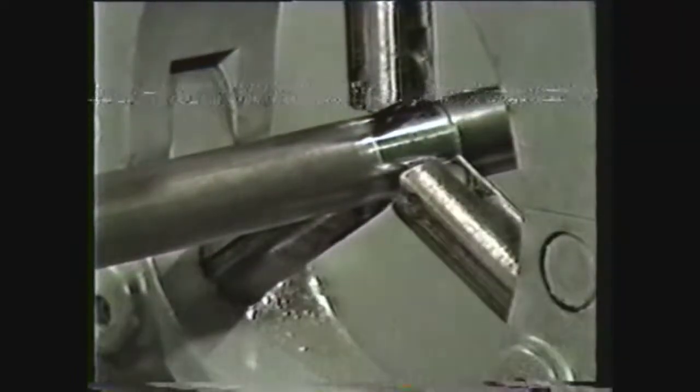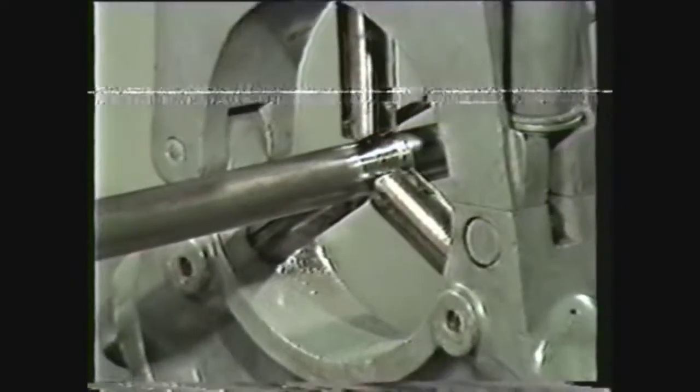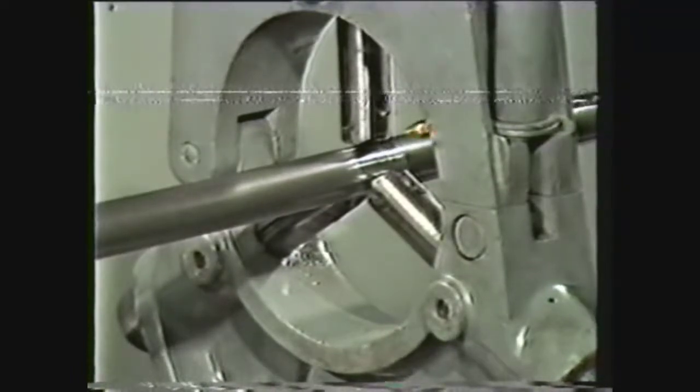Lubricate the jaws and the bearing surface with a light film of lubricating oil. Start the lathe and note whether or not the lubricant is rubbed off as the work revolves under the jaws.